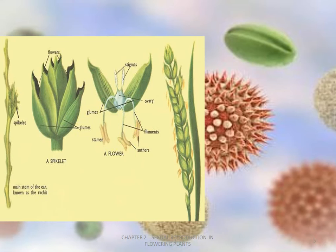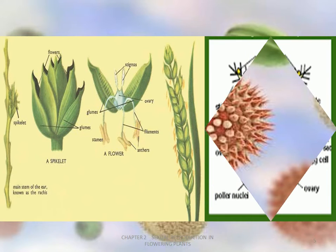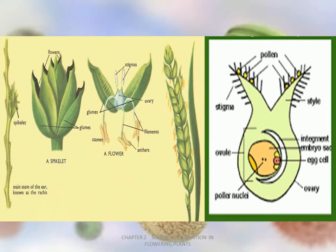Before moving on, let's see the structure. Here, the example of paddy and wheat is shown in this diagram, which shows that the ovary contains a single ovule.